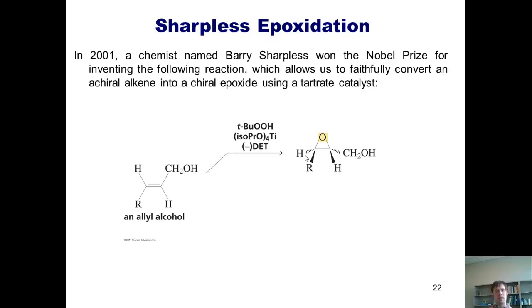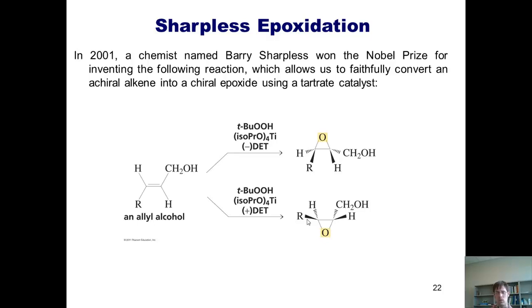This reaction has its complementary counterpart, for if I treat the same allyl alcohol with tert-butyl hydroperoxide and plus DET, I can get the opposite enantiomer with high fidelity. This reaction, believe it or not, is extremely useful, which brings us back to a principle I introduced to you in Chapter 5. You can't get chirality in a product unless you already have chirality in your starting material or in one of your reagents.